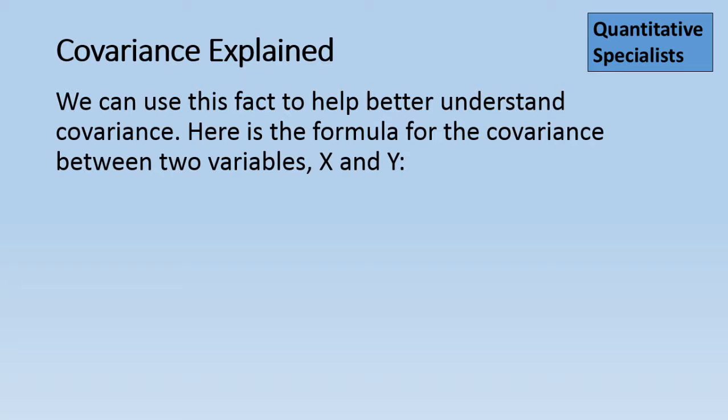So we can use this fact to help better understand covariance. Here's the formula for the covariance between two variables X and Y. And this shows us here covariance of X and Y is equal to the correlation between X and Y times these two terms.